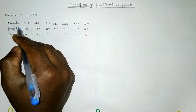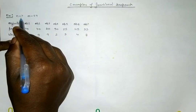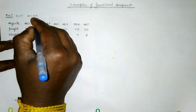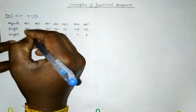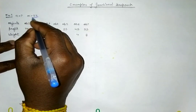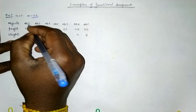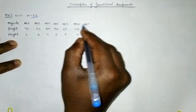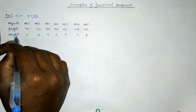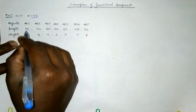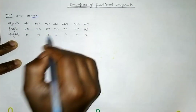We are having 7 objects and 24 is the Knapsack Capacity — M is nothing but the Knapsack Capacity. So we are having 7 different objects, and a profit and weight is associated with each of the objects.